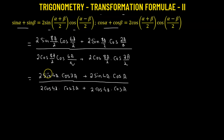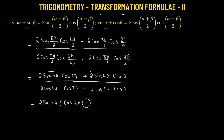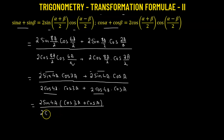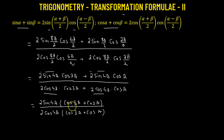Now in the numerator, we see that 2 times sine of 4a is a common factor, so we take it out: 2 times sine of 4a multiplied by (cosine of 3a plus cosine of a). Coming to the denominator, we see that 2 times cosine of 4a is the common factor in both terms: 2 times cosine of 4a multiplied by (cosine of 3a plus cosine of a). Now, cosine of 3a plus cosine of a is a factor common to both numerator and denominator, so we can cancel it out. We can also factor out 2, and we are left with the ratio sine of 4a to cosine of 4a.